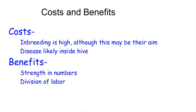The worker bees actually choose which larva is going to become the queen. The reason animals live in societies is because the benefits outweigh the costs. The costs for bees include disease, and hives don't last forever. But the benefits are much greater — strength in numbers, and of course the major benefit is a great division of labor, as seen in the difference between the queen, the drone, and the worker bees.